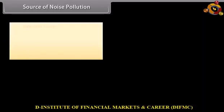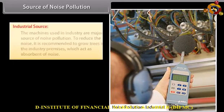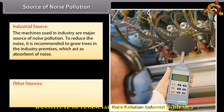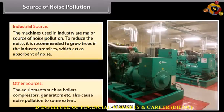Industrial sources: the machines used in industry are a major source of noise pollution. To reduce the noise, it is recommended to grow trees in the industry premises, which act as absorbents of noise. Other sources include equipment such as boilers, compressors, generators, etc., which also cause noise pollution to some extent.